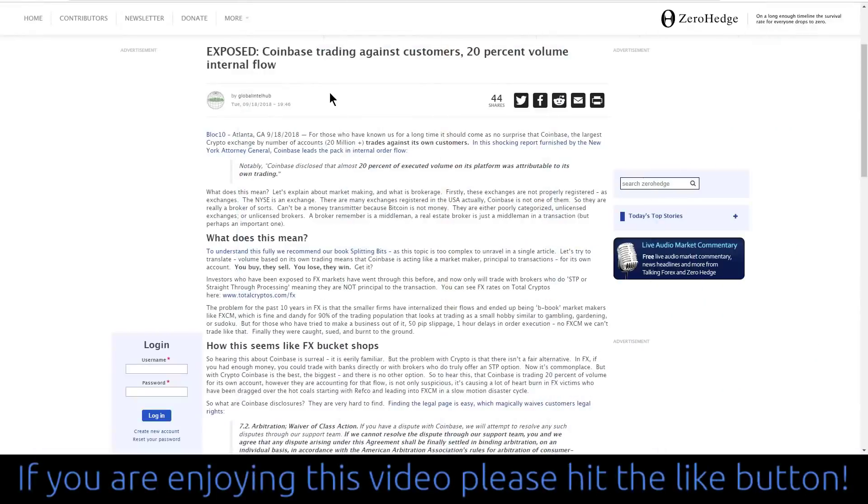Now let's take a look at this controversy surrounding Coinbase and the New York Attorney General's report. I'm going to grossly simplify this, otherwise the video is going to be an hour long. But this story was initially featured on Zero Hedge. They published this expose which carries the headline: Coinbase Trading Against Customers, 20% Volume from Internal Flow. And it starts off exposed in capital letters.